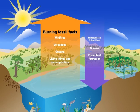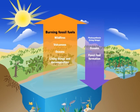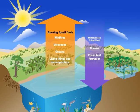One big part of the solution will be to reduce our carbon dioxide emissions by burning less coal, oil, and gas. This will help bring the carbon cycle closer to its natural balance.